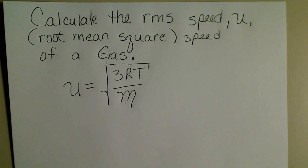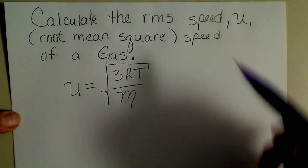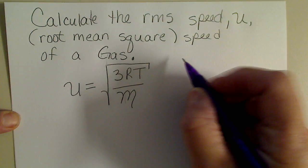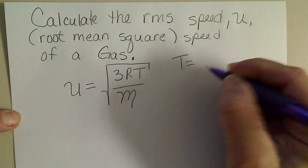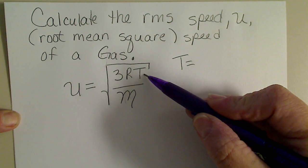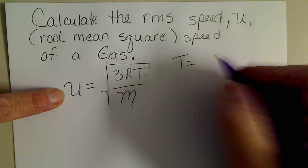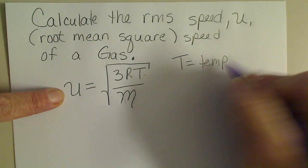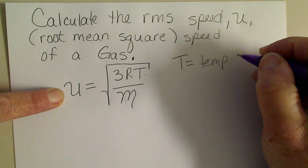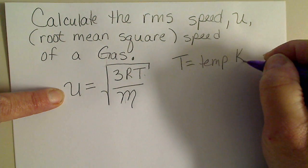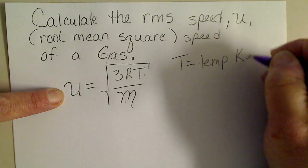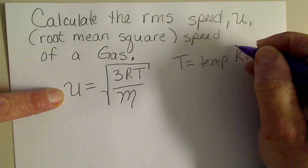This is very close to the average speed of a gas. In this equation, T is the absolute temperature in Kelvin, and so the higher the temperature, the faster the gas will travel. Any time we use temperature in a calculation, that's got to be in Kelvin.